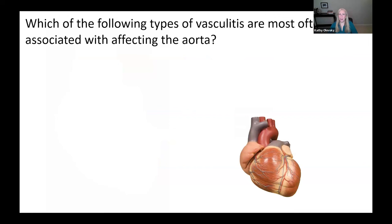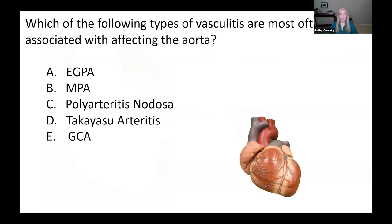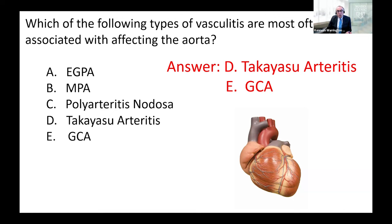Which types of vasculitis are more often associated with affecting the aorta? The choices are EGPA, MPA, polyarteritis nodosa, Takayasu arteritis, or GCA. The answer is Takayasu arteritis and GCA — two answers. The aorta being the largest artery falls in the category of large vessel vasculitis, and those two are the main ones. So these two types of vasculitis may and often do involve the aorta.